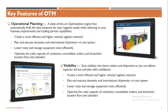Moving to the key features of OTM — the heart of OTM is the optimization engine planning. This optimization engine provides the best solution for your logistics needs, where you can create efficient logistics networks. You can easily plan your domestic and international shipments from one particular system, and you can also manage your rates and different kinds of equipment easily.